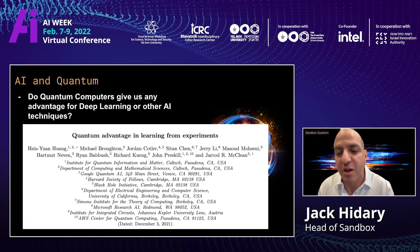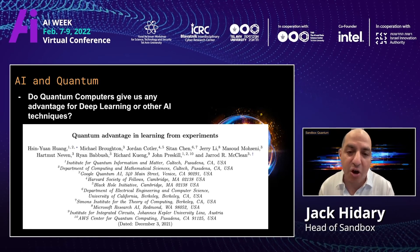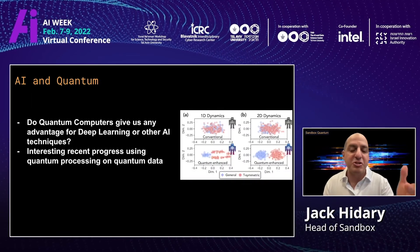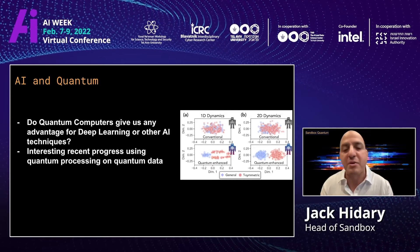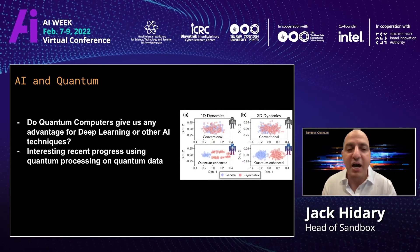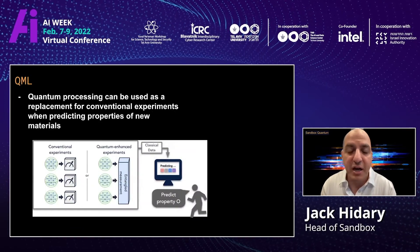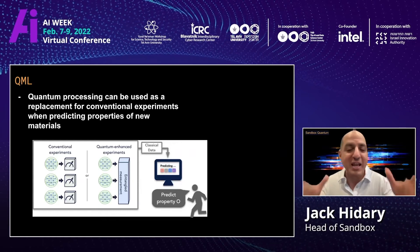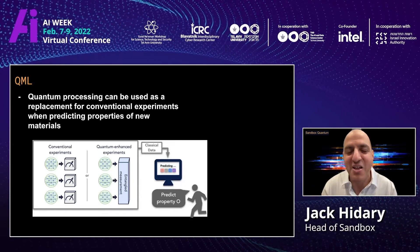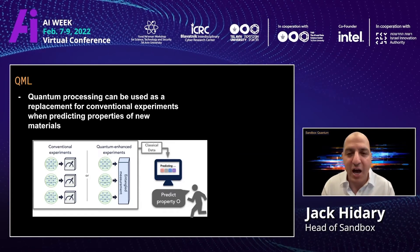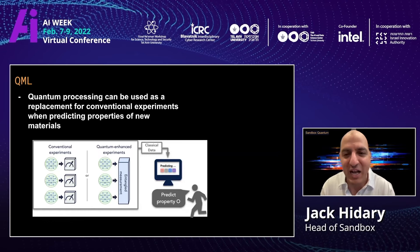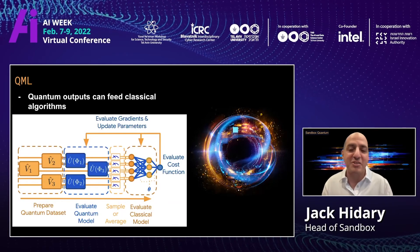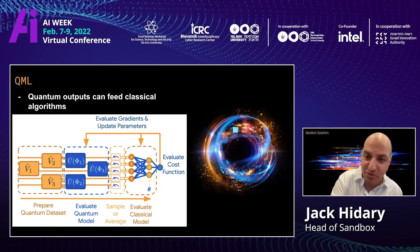There are numerous papers coming out every single month exploring how to use classical and quantum together in a machine learning or deep learning context to gain advantage. Here's a recent paper from a number of colleagues — I commend this to the audience — on quantum advantage and learning from experiments. They're looking at exploring the properties of exotic and new materials using this hybridization approach, which is quite interesting. In a short talk such as this today, we're not going to go into all the technical details, but perhaps in a future talk we can go through it step by step.